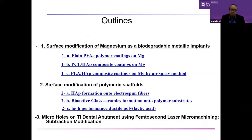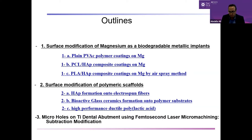Today I want to talk about surface modification of magnesium, which is a very established material for bone and orthopedic applications. Then I will talk about surface modification of polymeric scaffolds, including nanofibers and 3D-printed scaffolds. Also, as my background currently is in dental implant materials, I want to discuss something very novel we have developed in our group and share that with you.